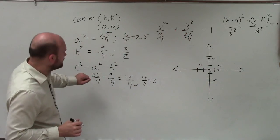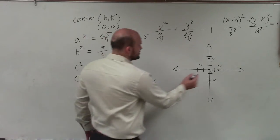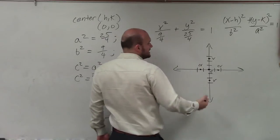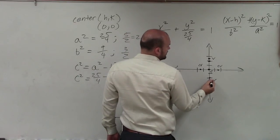And then lastly, we need to determine our foci, which has a distance of 2. So again, remember the foci, the vertices, and the center are all on your major axis, which is vertical. So I'm going to go up 2 and down 2.